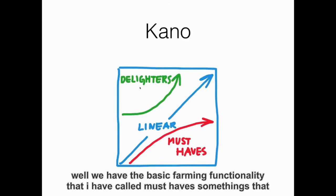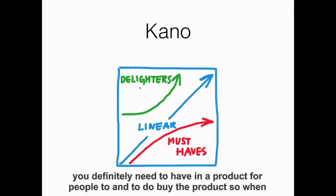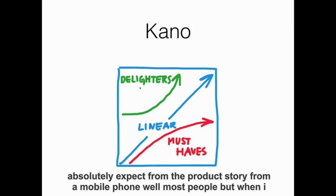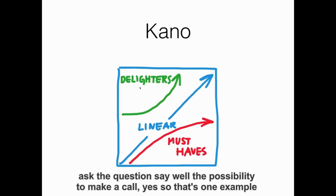We have the basic functionality that I have called must-haves — some things that you definitely need to have in a product for people to buy or use the product. When I take a look at the mobile phone, for example, what are the basic functionalities that I would absolutely expect from a mobile phone? Most people, when I ask the question, say the possibility to make a call. So that's one example.